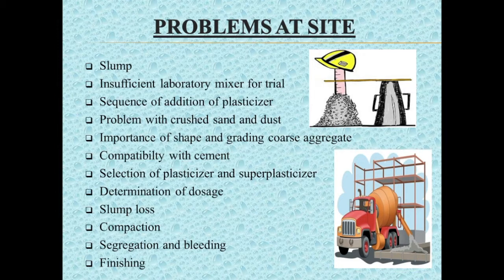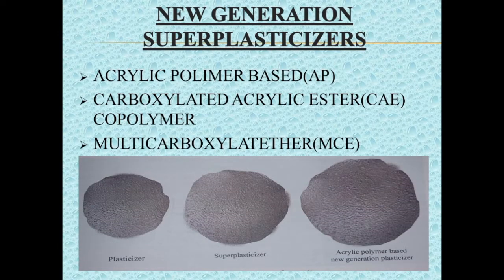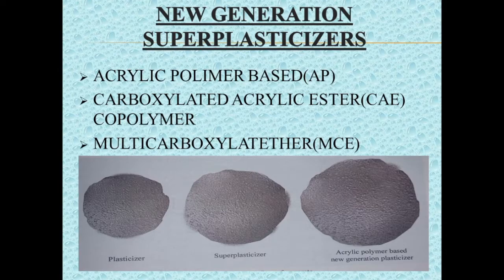Hence such concretes must be handled with care. More recently in Europe and Japan, new generation superplasticizers based on acrylic polymers have been widely used. Two types — carboxylated acrylic ester co-polymer and multi-carboxylated ether — are of particular interest. The new family of superplasticizers based on acrylic polymers shows the following characteristics: flowing concrete can be produced at a lower water-cement ratio; effectiveness does not depend on the addition procedure; and slump loss is much lower than with traditional sulfonated superplasticizers.